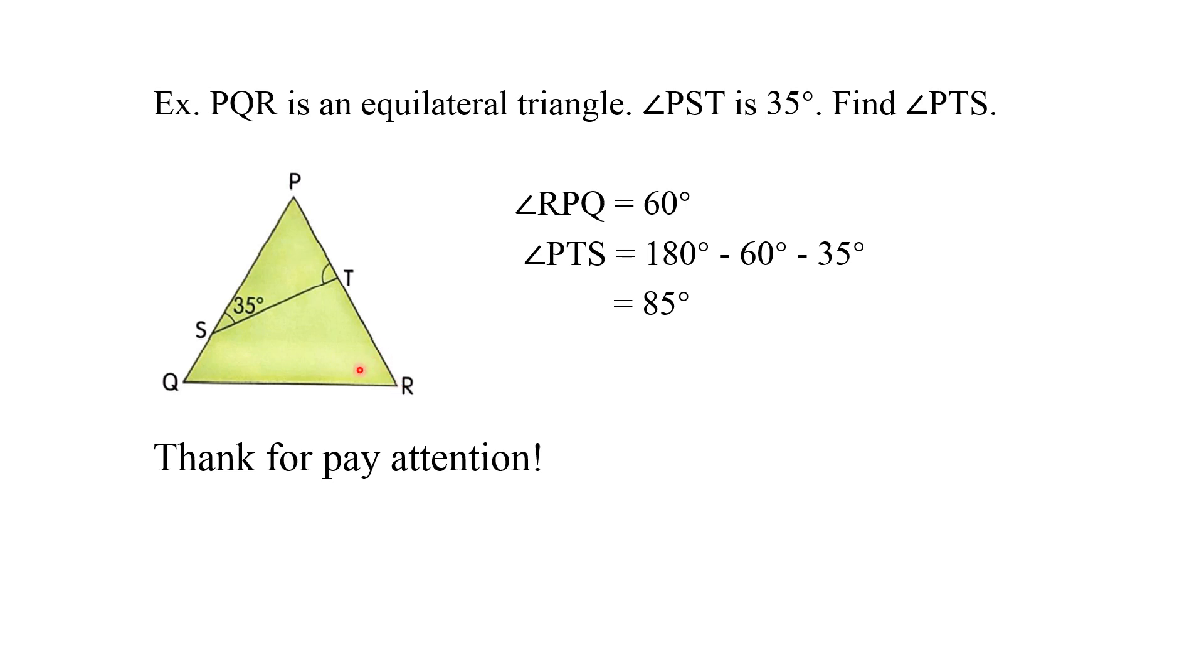You already know equilateral triangles. Each angle is 60 degrees. So, it means that this angle is 60 degrees. This angle, you know, already certified. If you want to find PTS, you just take 180 minus 60 minus 35.